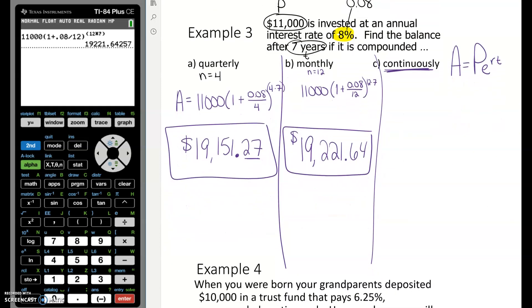So we would do 11,000*e^(0.08*7). So 11,000, find your E, 0.08 times 7, close those parentheses, $19,257.40. Don't forget your label. So notice compounded continuously earns you even more over those seven years. The more you compound, the more money you're going to earn from that interest.